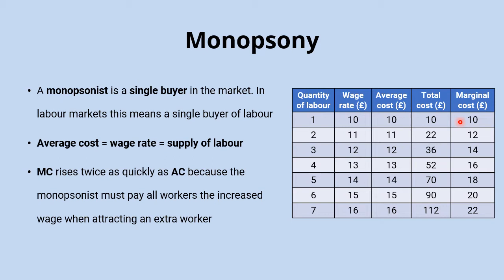You can see this in the table where the average cost goes up from 10 to 11 to 12, and so on. The marginal cost of labour, which is the change in total cost when we add an additional unit of labour, goes from 10 to 12 to 14, and so on.